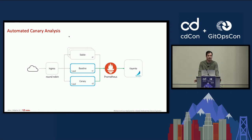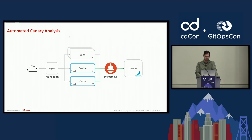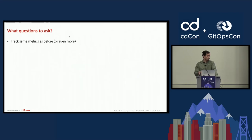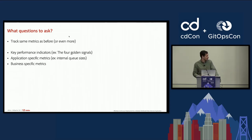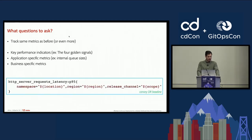To automate this step, we have the same setup, only now we redirect the metrics to Kayenta — an open source tool which uses a statistical algorithm to compare metrics and detect pattern differences. Kayenta will not know what to analyze out of the box; you need to configure it to track the same metrics you track manually. You can track various metrics from purely technical ones to business-specific ones. Configuring Kayenta is straightforward — you just query your metrics backend as you do in Grafana, which in our case is a parameterized Prometheus query.